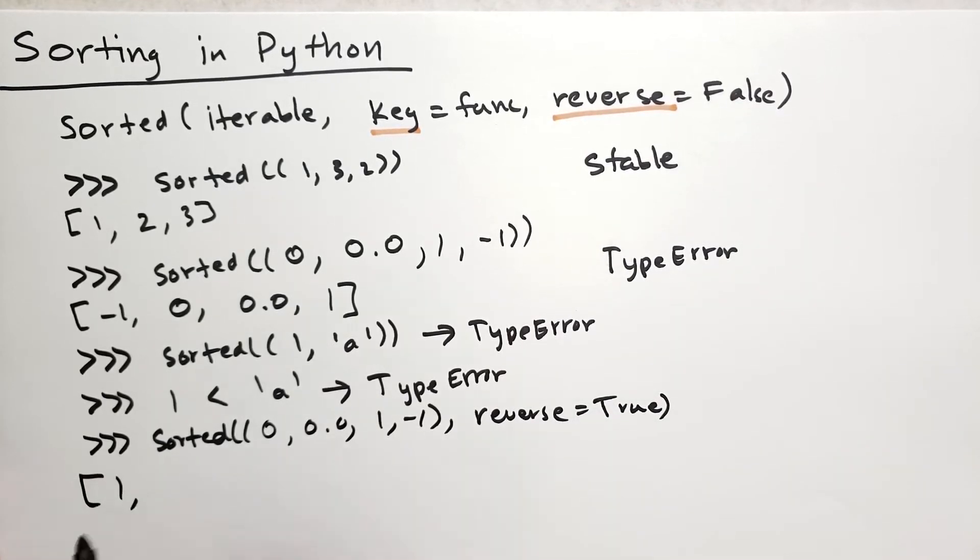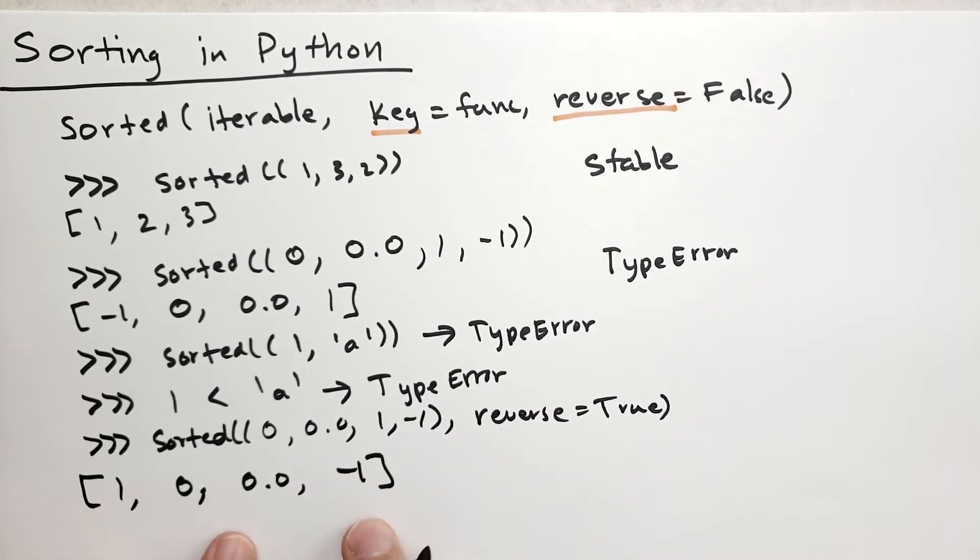In this case it will give me the ordering like this: 1, 0, the floating point 0, minus 1. So it preserves the order still - it's still stable but it will start from the greatest values and go to the least values.